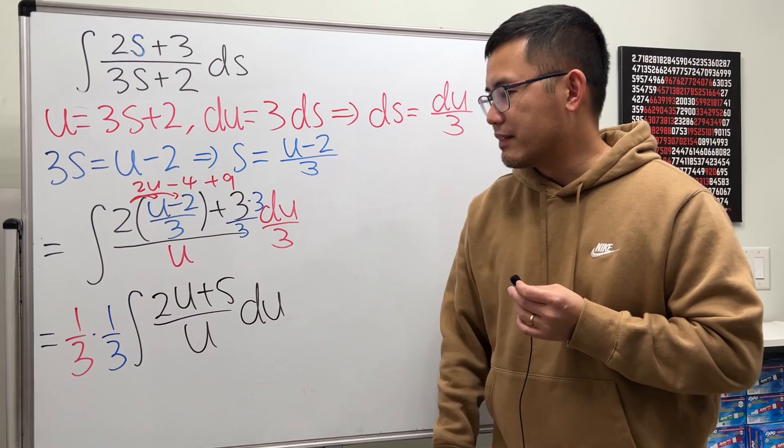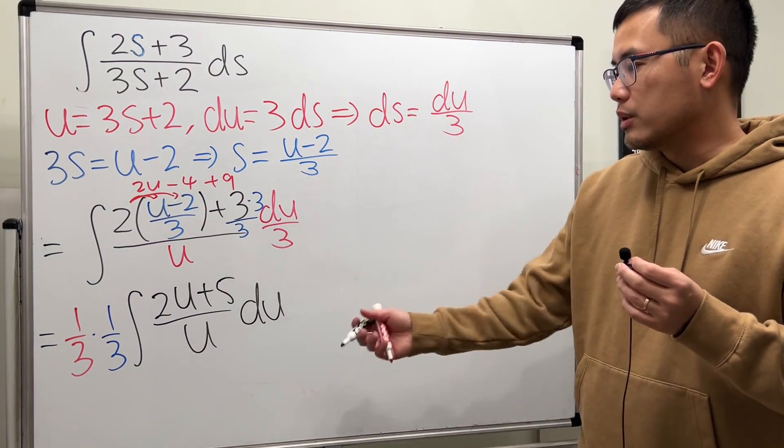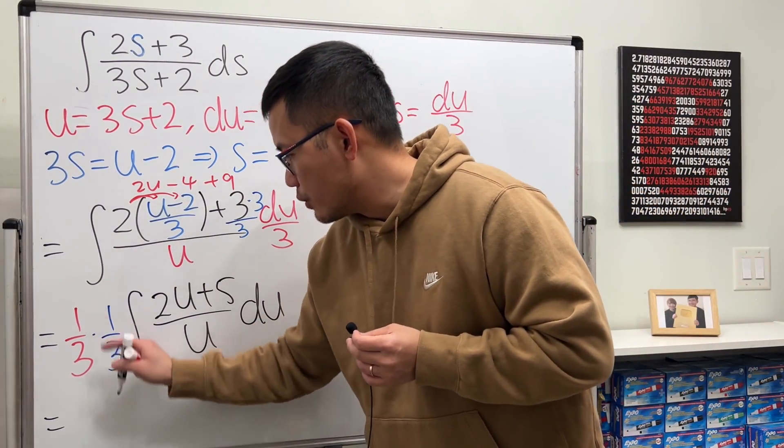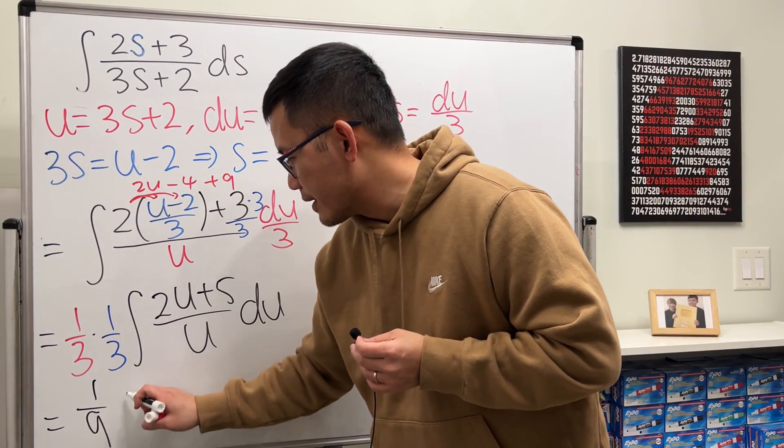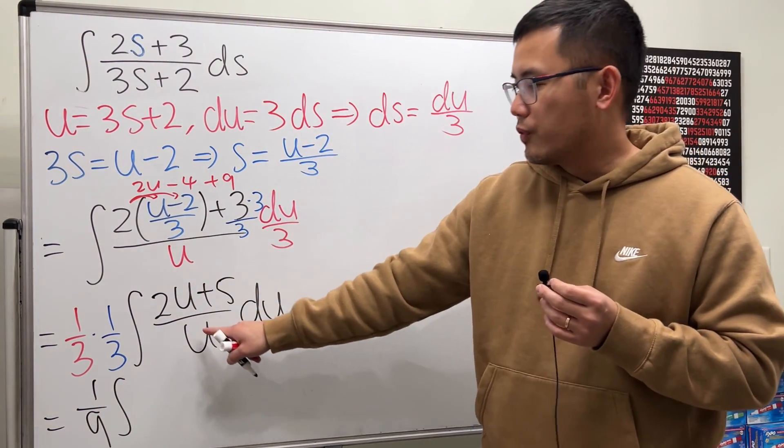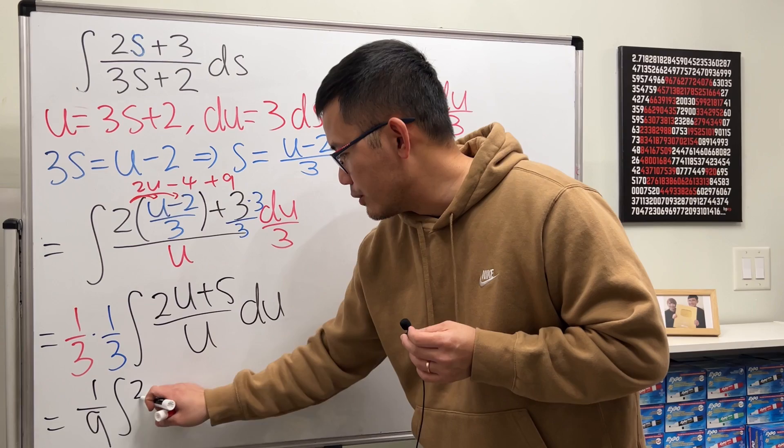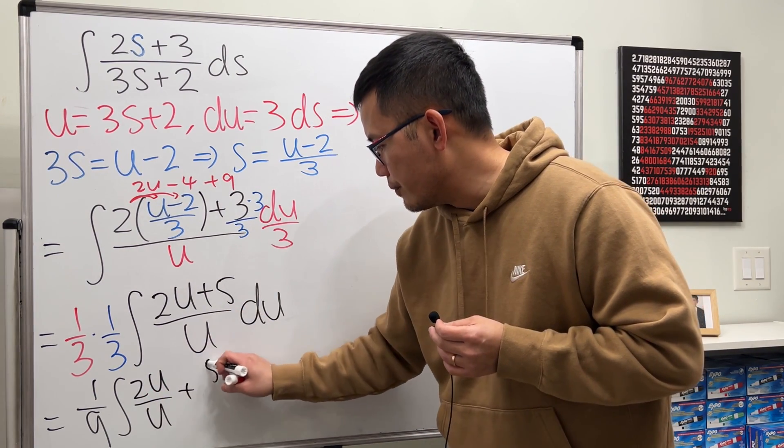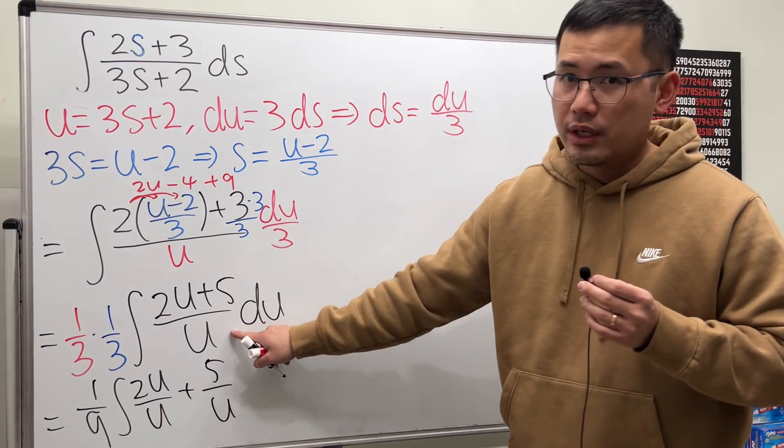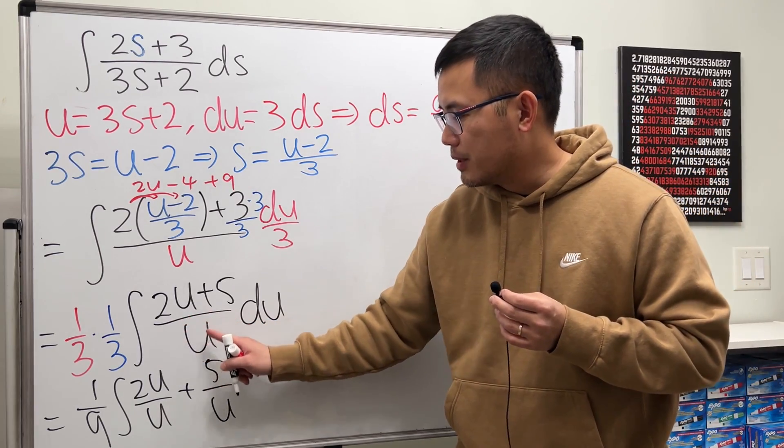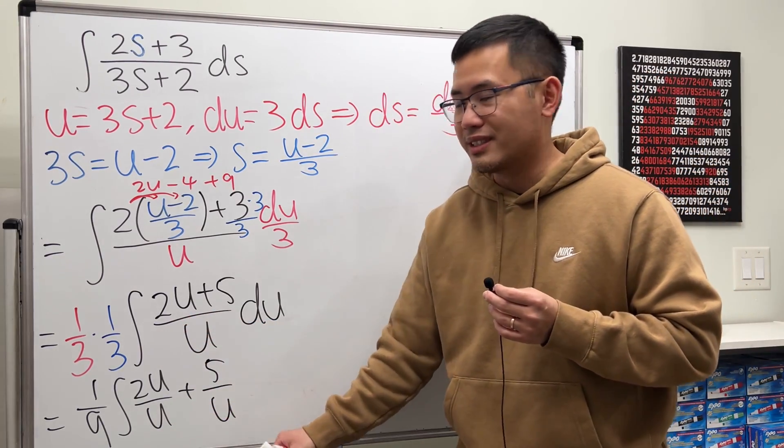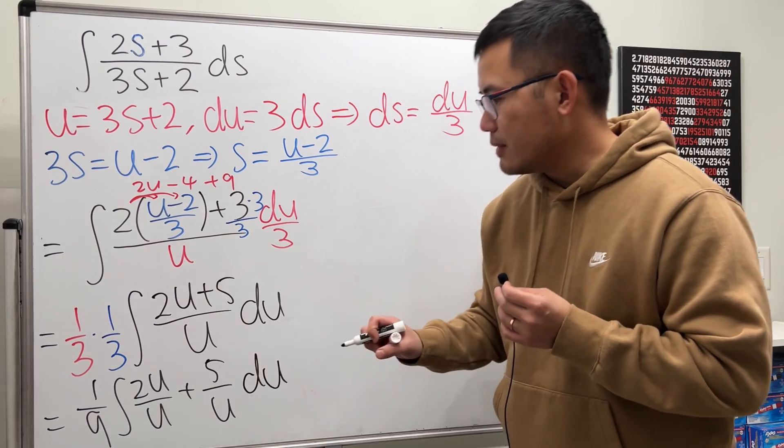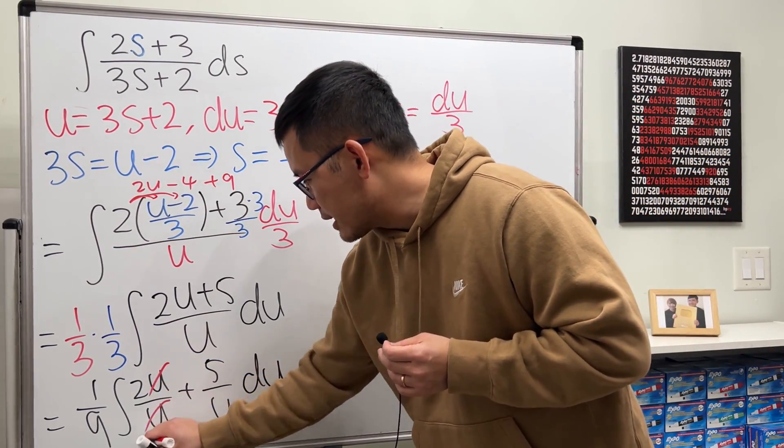So of course, we have the 1 over 9 in the front. And now we can just finish it. And to do so, we first multiply that's 1 over 9. Integrate this. First, let's split the fraction. So we are looking at 2u over u plus 5 over u. And remember, we can do this when we have one thing on the bottom. You keep the same denominator throughout the u. All right. So this and that cancel.